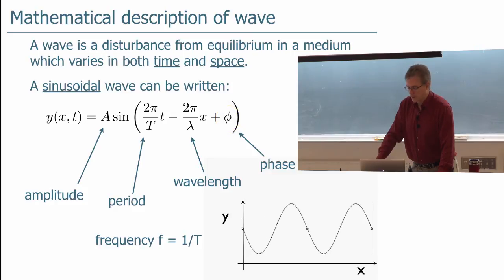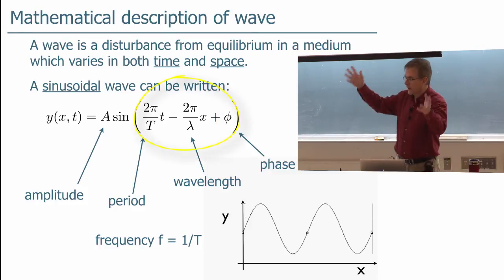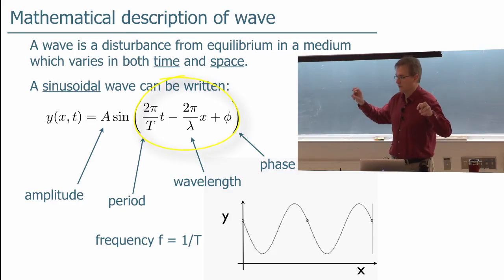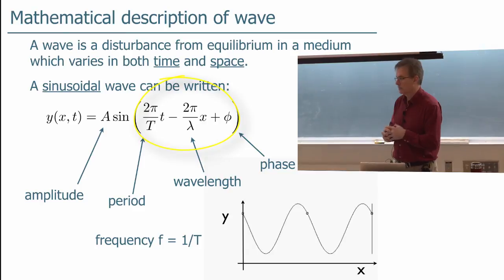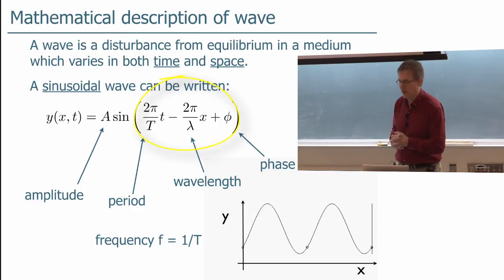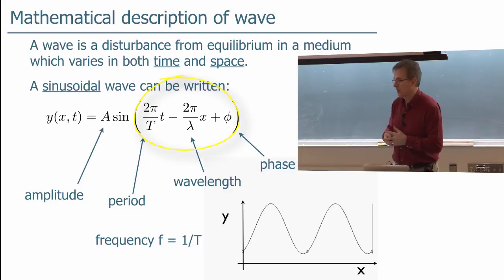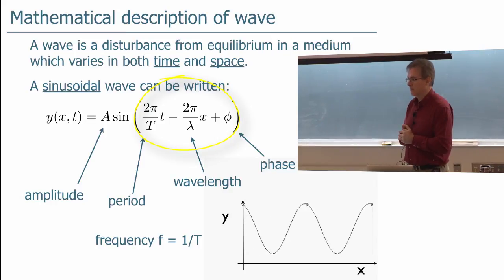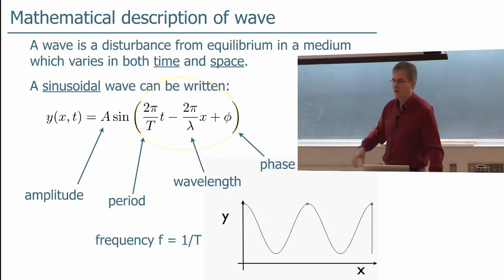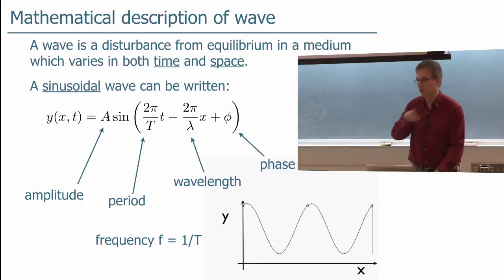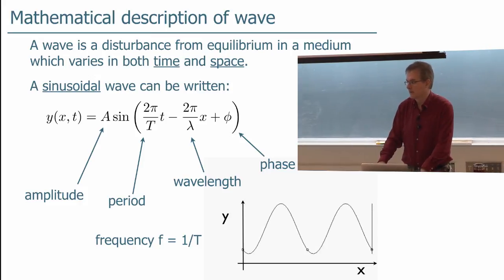But you should think of, though, the whole thing in parentheses as what we were calling the total phase of the wave. It's the total argument of the sine function for the wave, and it's always increasing with time, and it goes through 2π every time you go through a full period T. It also goes through 2π every time you go through a full wavelength lambda, okay?